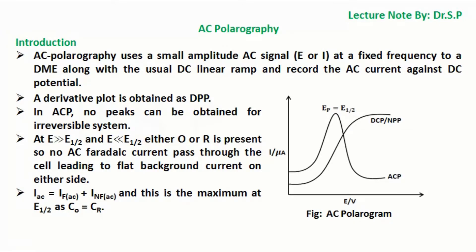In ACP, no peaks can be obtained for irreversible systems. At E >> E_1/2 or E << E_1/2, either oxidant O or reductant R is present, so no AC faradaic current passes through the cell, leading to flat background current on either side. I_AC = I_F(AC) + I_NF(AC) and this is maximum at E_1/2 as C_O = C_R.